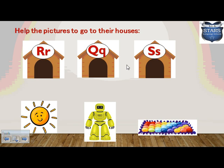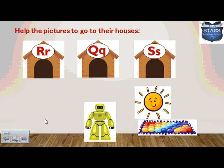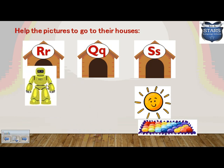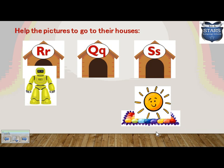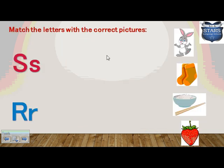Here we have three houses: one with letter R, one with letter Q, and one with letter S. We have three pictures: son, robot, and quilt. We are going to match the pictures to their houses. Son starts with letter S — excellent! Robot starts with letter R — amazing! And quilt starts with letter Q — excellent!